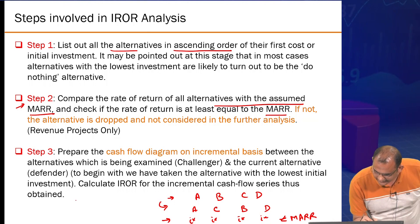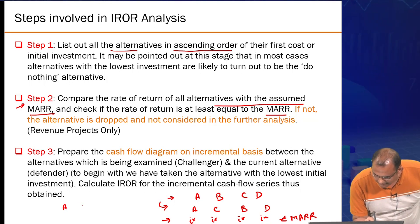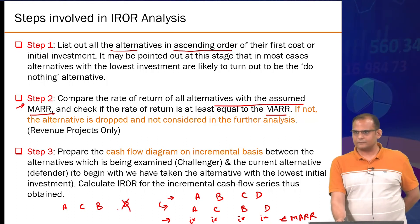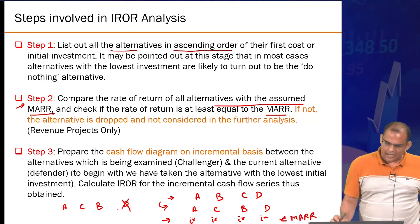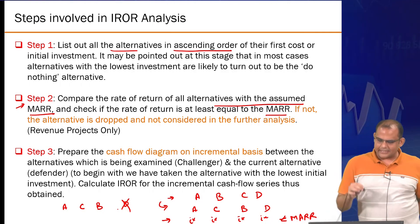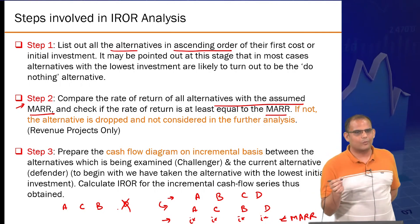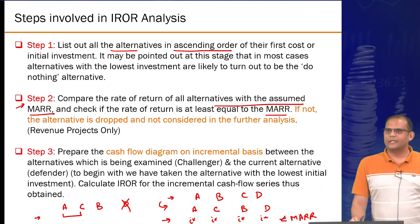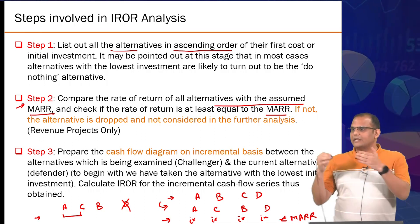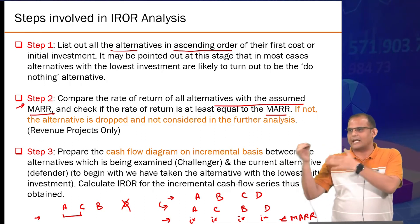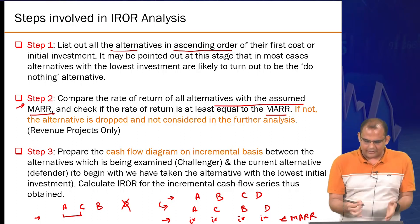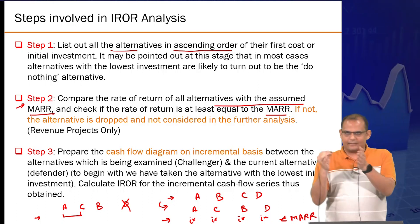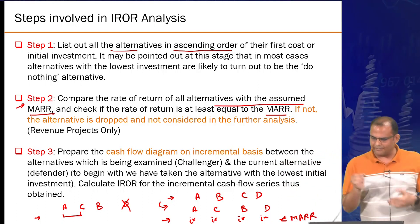Suppose after step 2, option D is eliminated. Now, prepare the cash flow series on an incremental basis. Compare A and C: prepare a cash flow series which is C minus A, then B minus C, and so on. That is what is done in the incremental series.